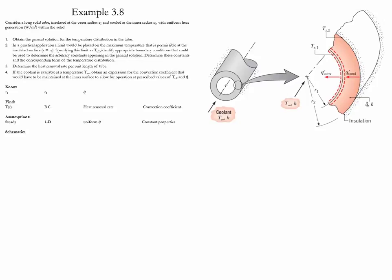Example 3.8. In this example we have a long solid tube which is insulated on the outer surface and cooled on the inner surface. It has a uniform heat generation within the solid.